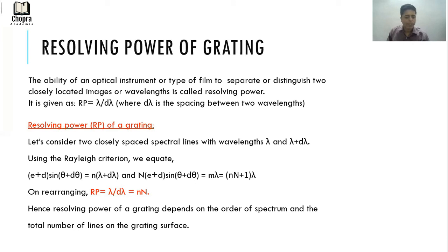By equating, we get the resolving power to be equal to small n times capital N. So n is the order of the fringe and capital N is the number of slits, number of lines on the grating.